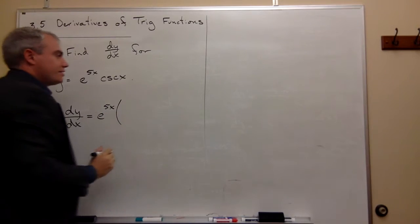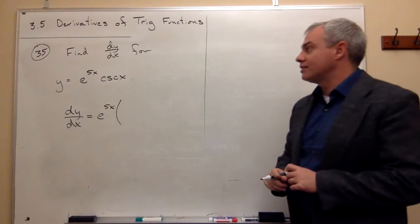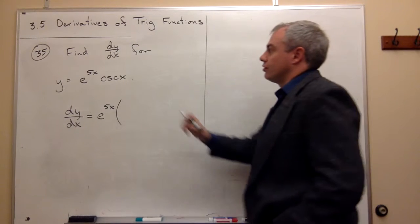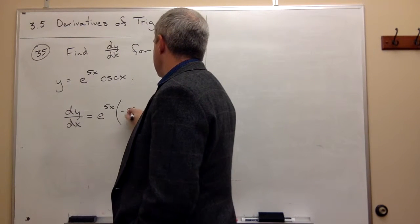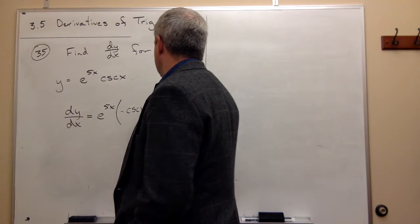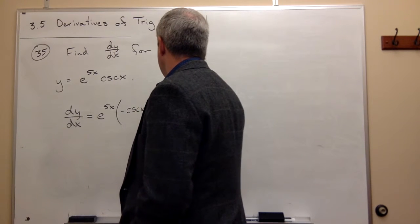So what is the derivative of cosecant of x? The derivative of cosecant of x is negative cosecant x cotangent x.